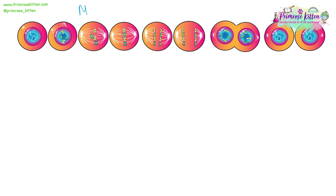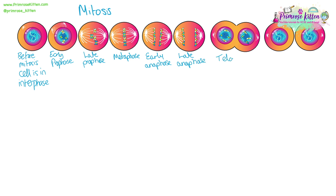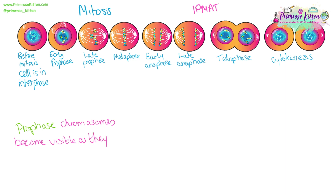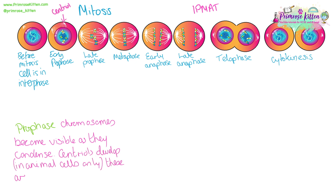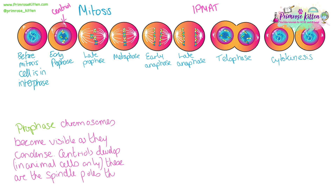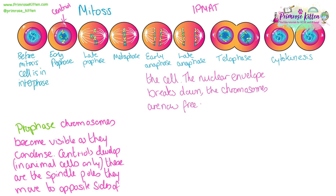There are several different stages of mitosis you need to know: interphase, followed by prophase, metaphase, anaphase, telophase, and cytokinesis. The way to remember the order is with IPMAT. During prophase, the chromosomes will become visible as they condense. Two centrioles will develop in animal cells only — these are the spindle poles — and they will move to opposite sides of the cell. The nuclear envelope will start to break down, and the chromosomes are now free within the cytoplasm.